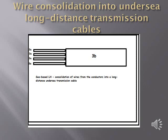Wire consolidation into undersea long-distance transmission cables. The wires 3a from the conductors 3 are consolidated into undersea long-distance transmission cables 3b, exiting at the safety unit in wire 3c.